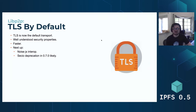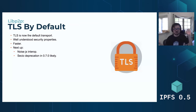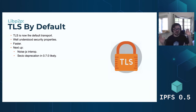Next up, we switch to TLS by default. For those who don't know, TLS — transport layer security — is a protocol for encrypting connections. Currently we're using a protocol called SecIO, but TLS is much better understood and has been proven. It just has better security properties. It's also faster, though it does use a lot of CPU.